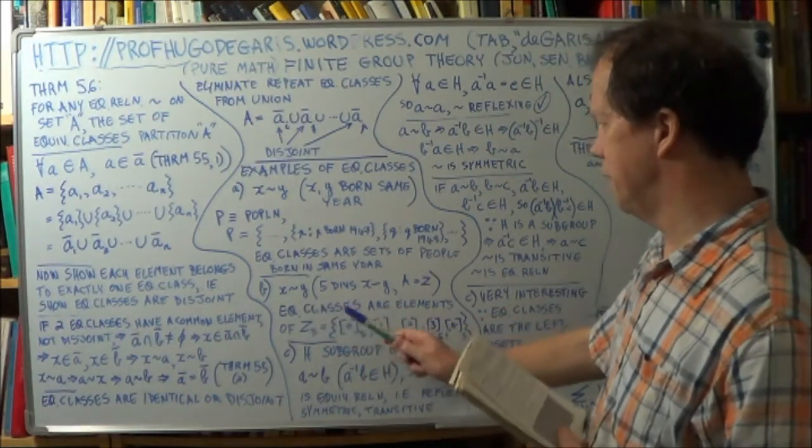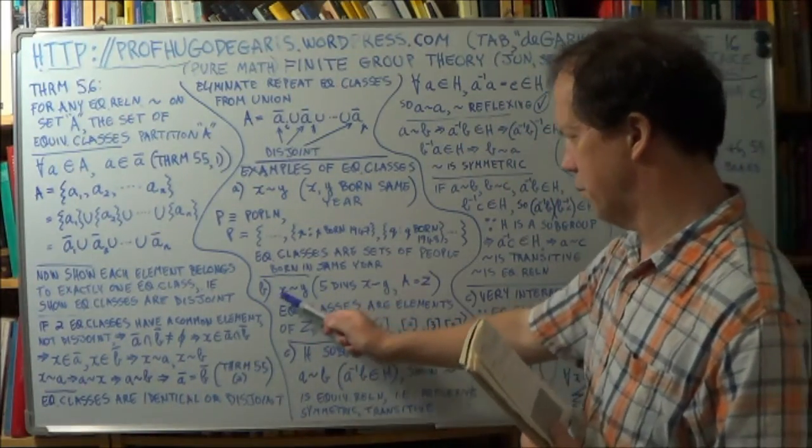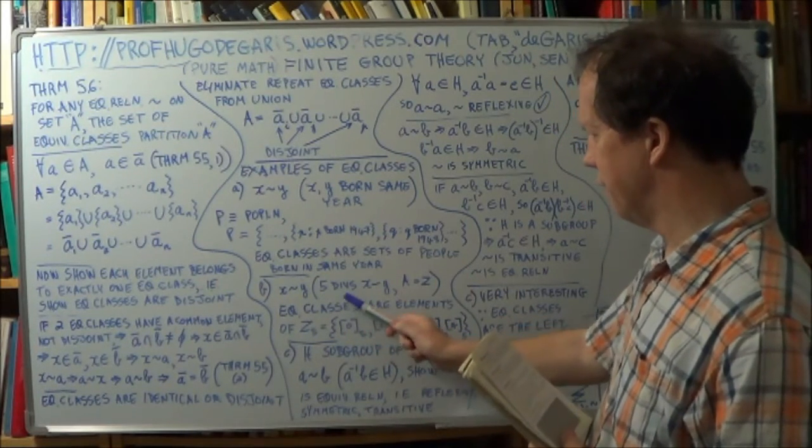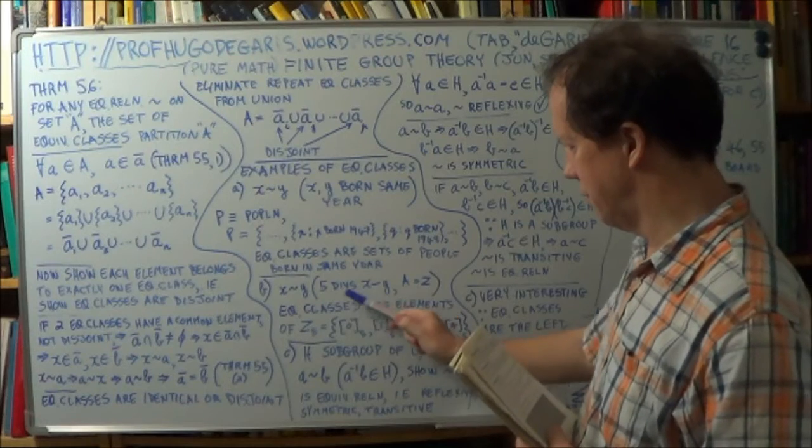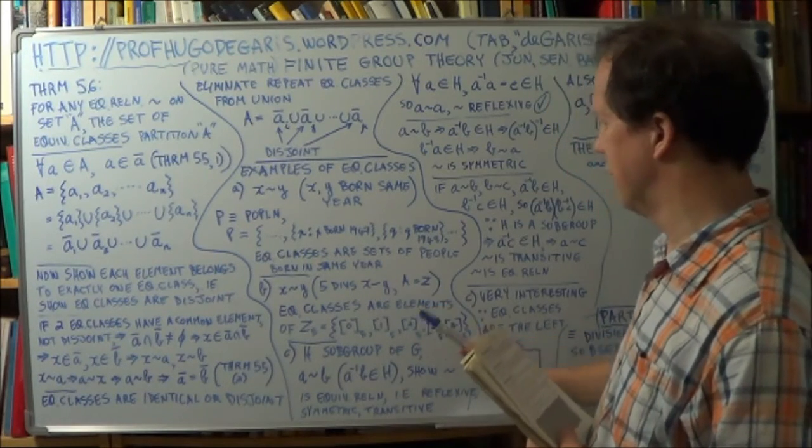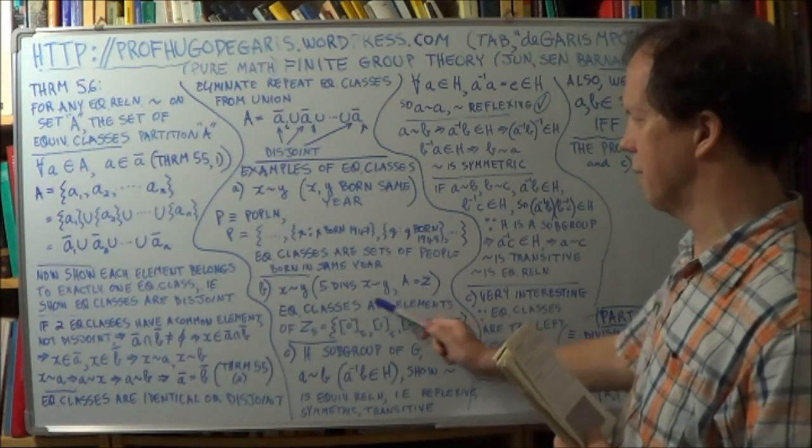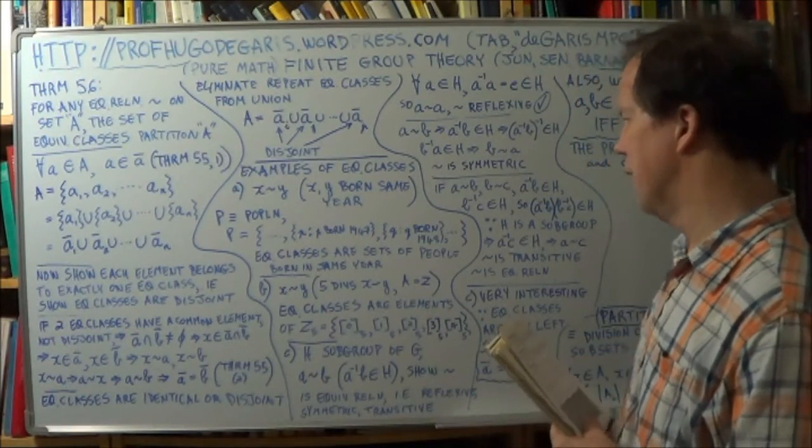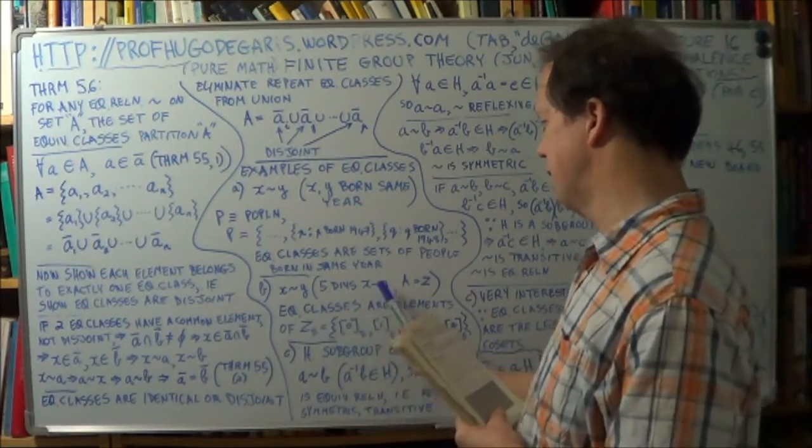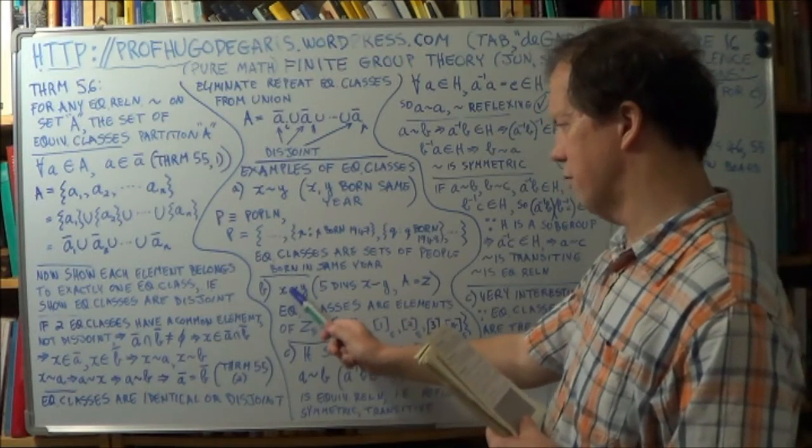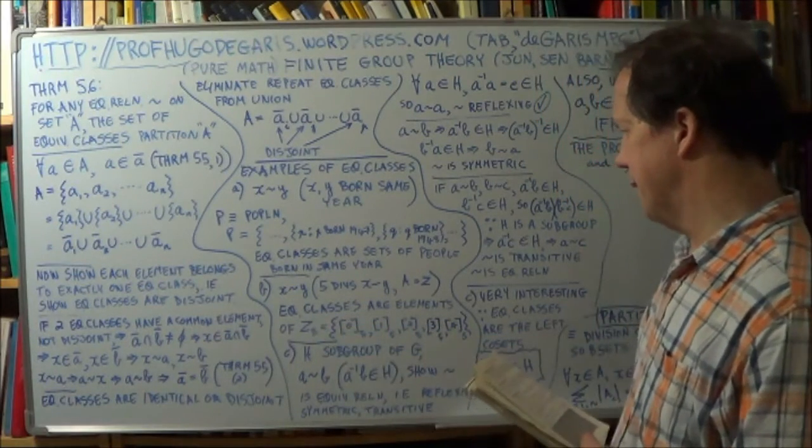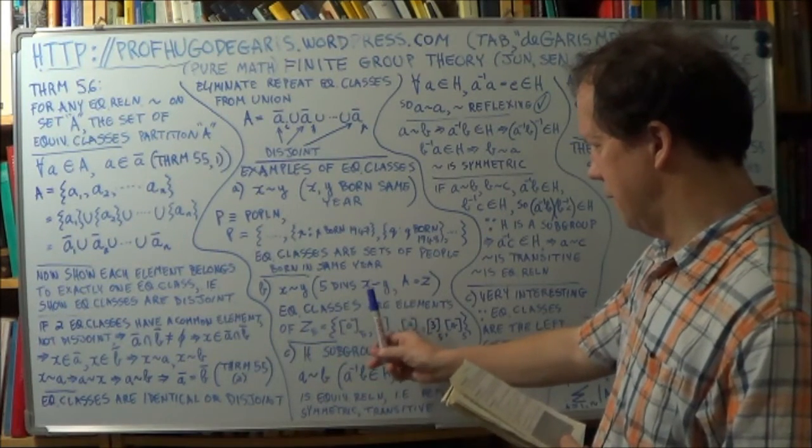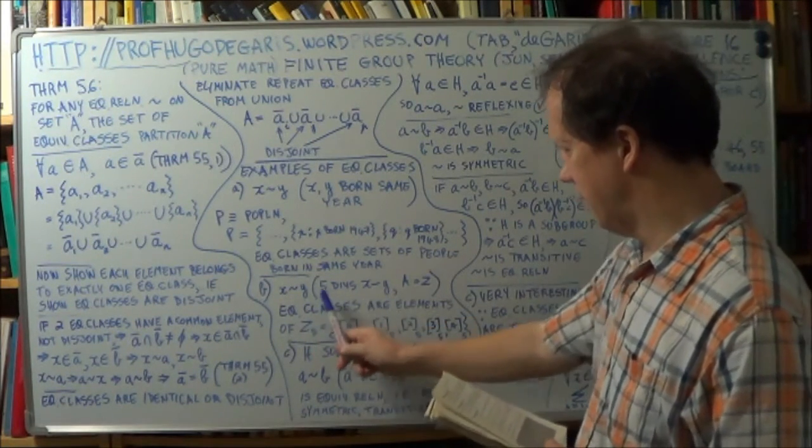Okay, here's another example. The equivalence relation is between two elements, x and y, if 5 divides their difference, divides the difference between x and y. And the set is the set of integers. So these x and y are just integers belonging to Z. So what are the equivalence classes for this equivalence relation?